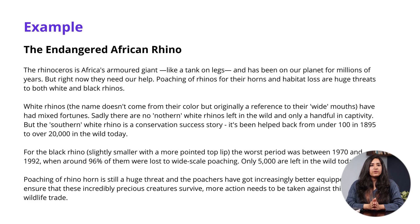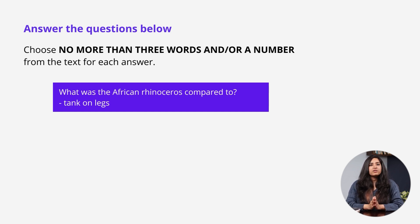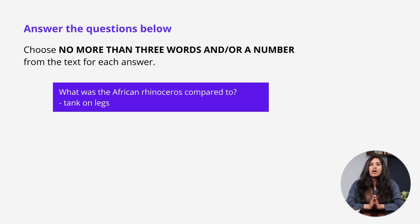We'll look at the questions first. As we can see, the instructions clearly state to answer questions by choosing no more than three words and/or a number from the text for each answer. The question asks: What was the African rhinoceros compared to? That is, a tank on legs. A short answer.